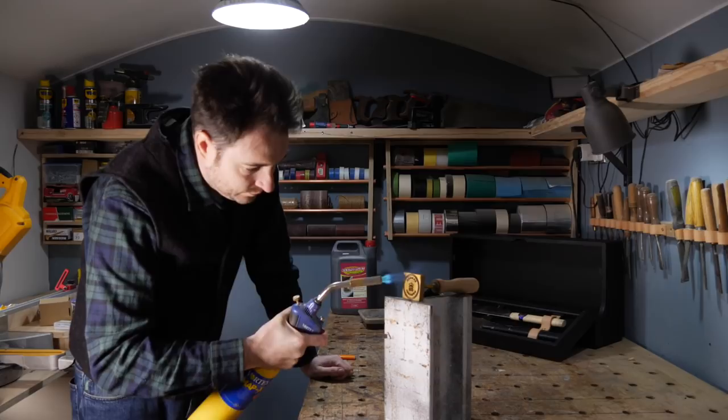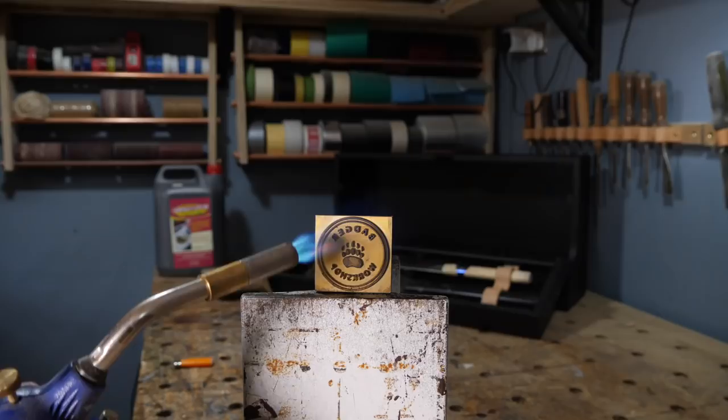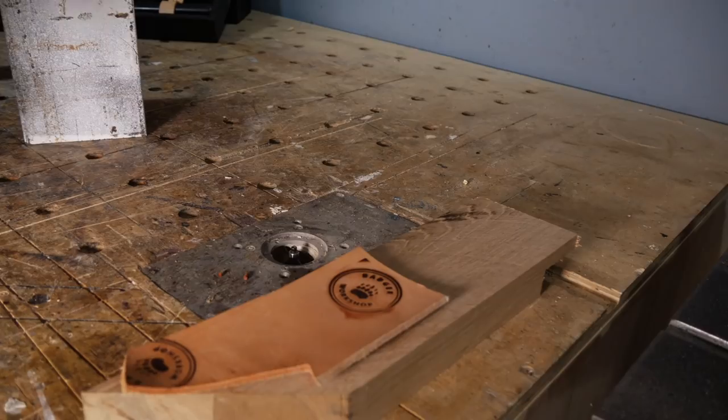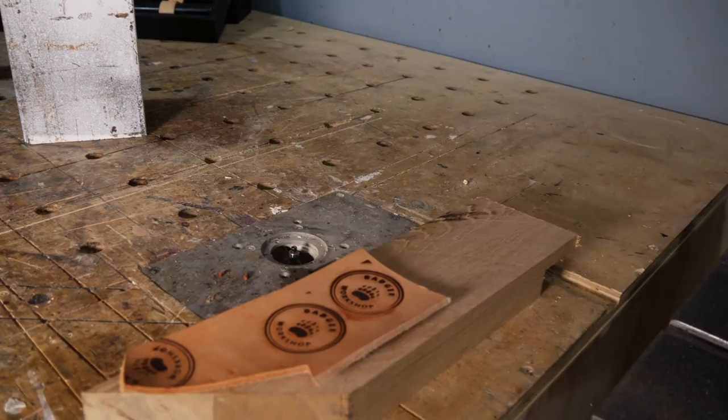Now I want to add a bit of personalization to this, so I'm going to heat up my branding iron. As I've painted the box, I can't just brand the wood, so I'm going to brand a little scrap of leather. It took a few goes to get the temperature right and an even impression, and then I can get the logo cut out.